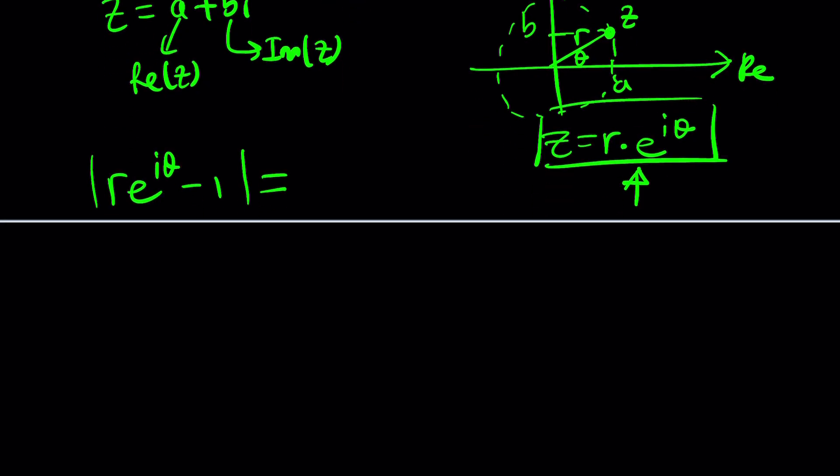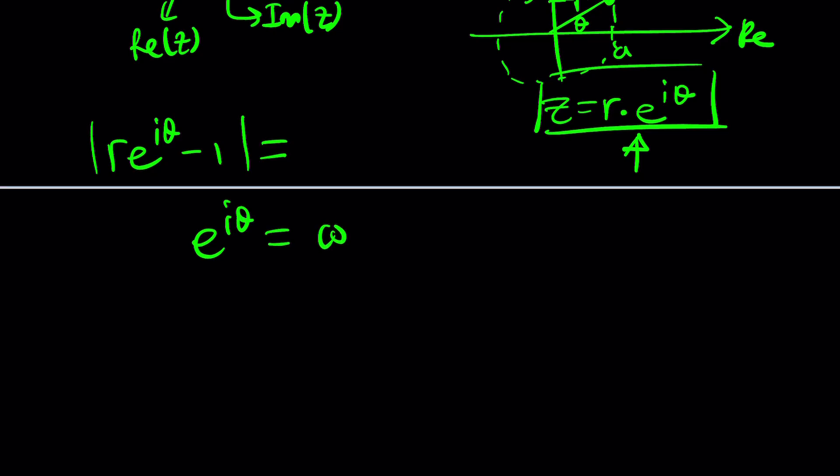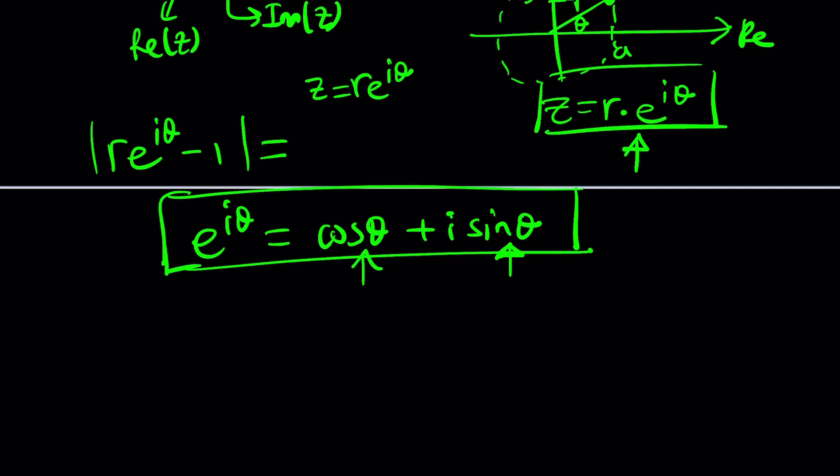Here comes the Euler's formula. So Euler said e to the power i theta is cosine theta plus i sine theta. Beautiful. Who else could have come up with an equation like this? No one. That's why Euler is the greatest, in my opinion, because this is mind-blowing. And the most beautiful equation in math can be derived from this formula. But why did I write this? Because this shows you the real part and imaginary part separately. But wait a minute, we don't have e to the i theta only, we have r times e to the i theta. So what did we do? Let's make sure we know what we're doing. We replace z with this.